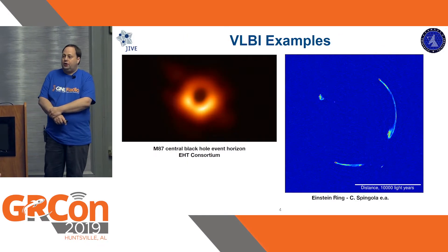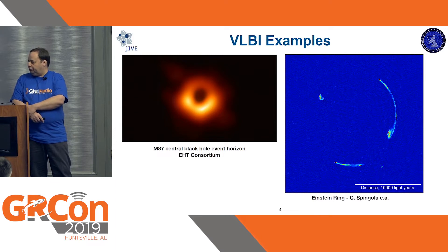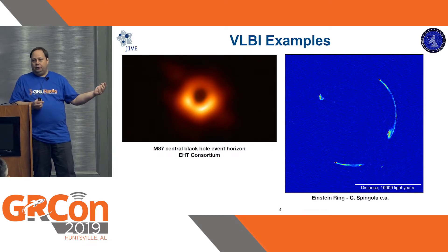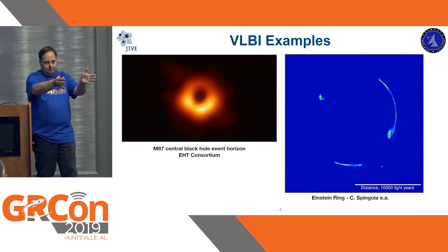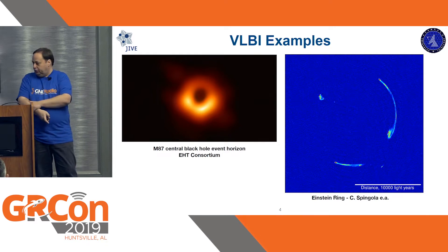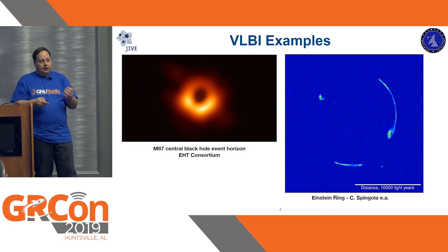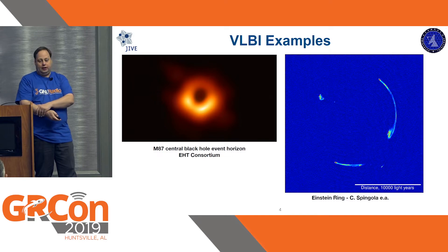So what can you do with VLBI? You can get unprecedented resolution. The image on the left is the black hole in M87, where the resolution is really sub-micro arcseconds. The image on the right shows a radio source 11.7 billion light years away, where a cluster of galaxies bends the radio signal by gravity, giving rise to a ring-shaped structure called the Einstein ring. The researchers were actually able to deduce the mass distribution in the galaxies and details about the very far away source.